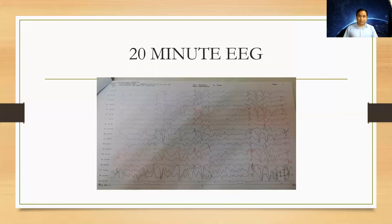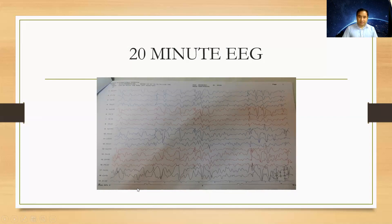We did the EEG of our patient after admission. We saw spike waves on a slow background. The spikes are coming from the bifrontal region, and the rate of this spike wave is around three to four hertz.